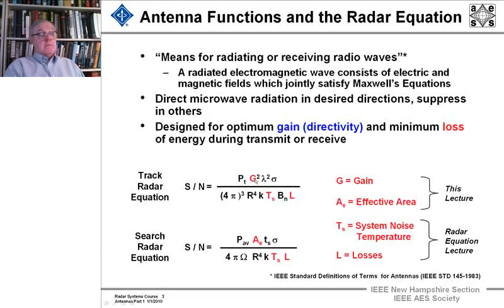And what we want to do in this lecture is talk about the gain. The gain is, in many cases, a simple way of looking at it: 4πA/λ², where A is the aperture size. And in the search radar equation, there's the effective size. So in this lecture we're going to talk about the gain and the effective area. And things that can affect the gain and the effective area are the losses in those systems.